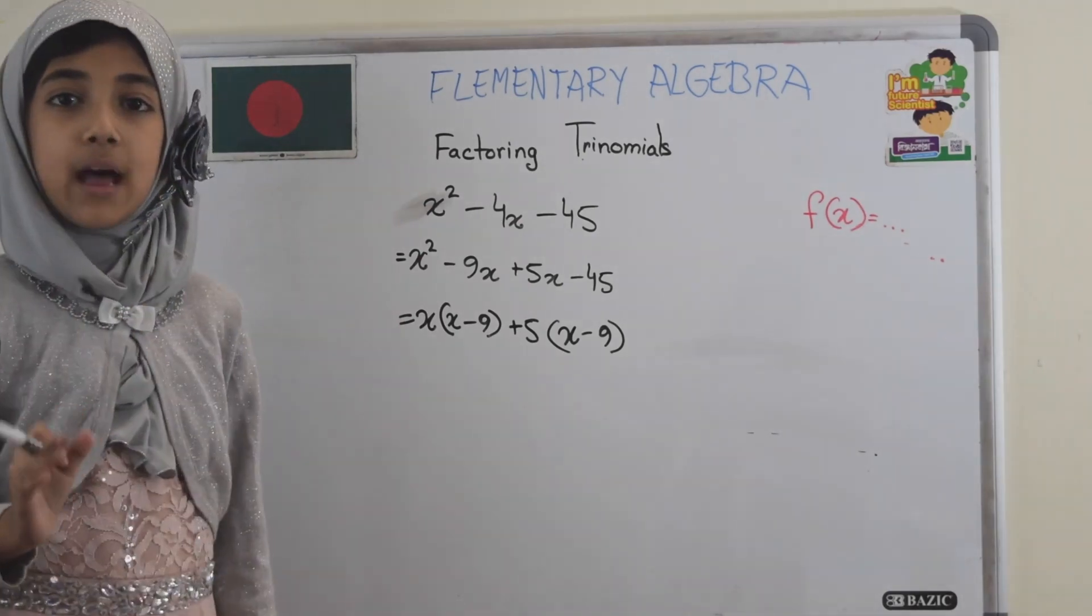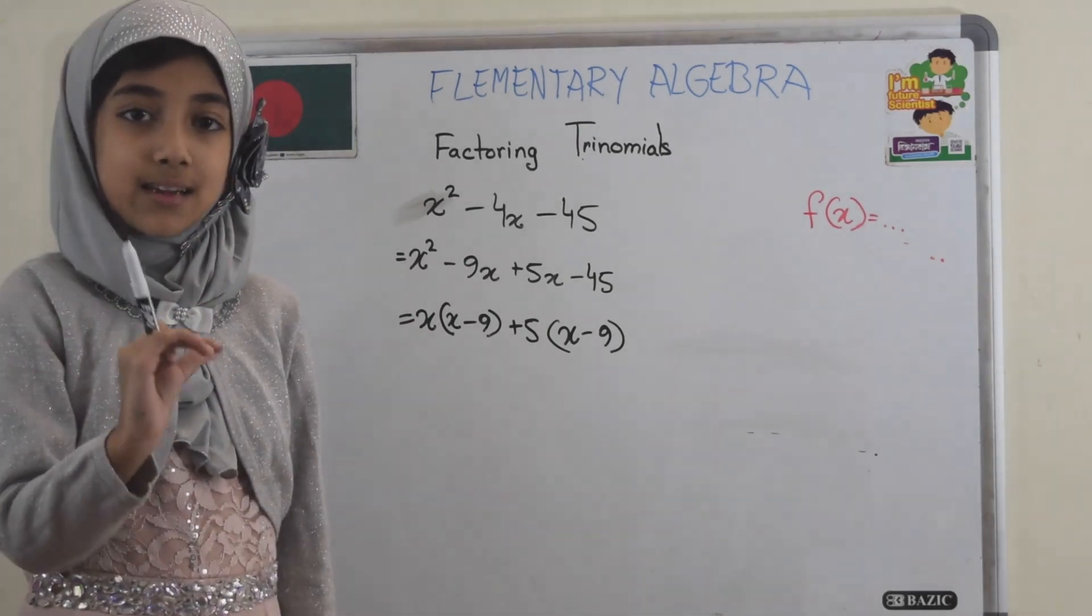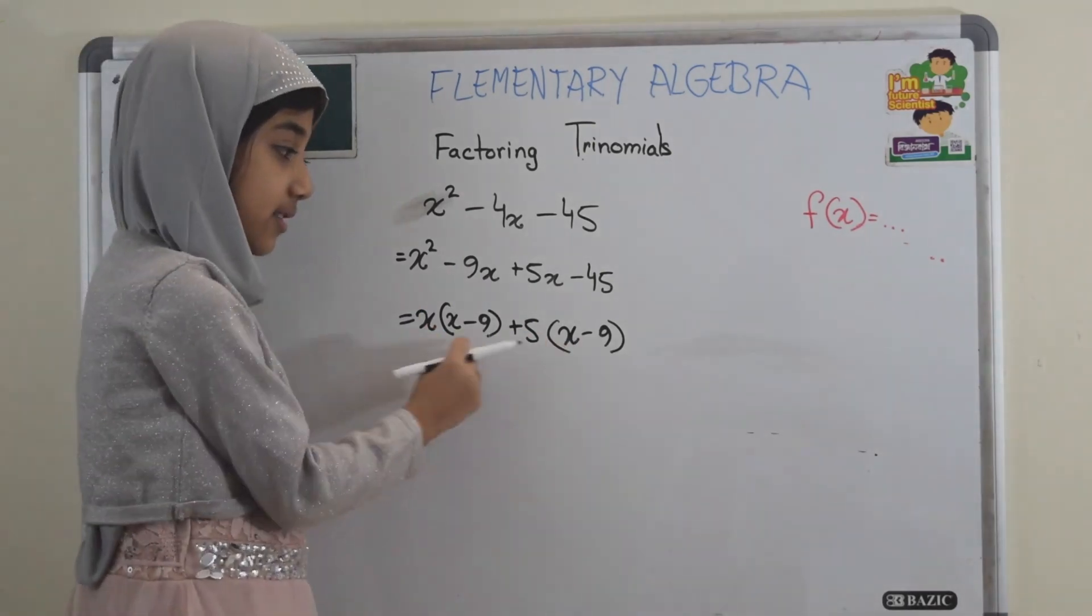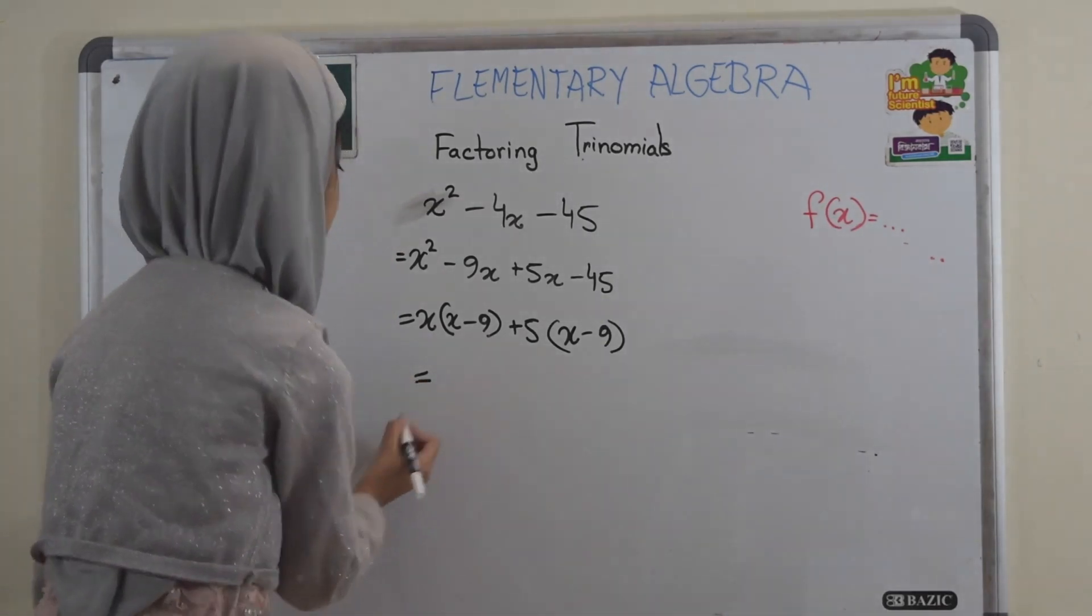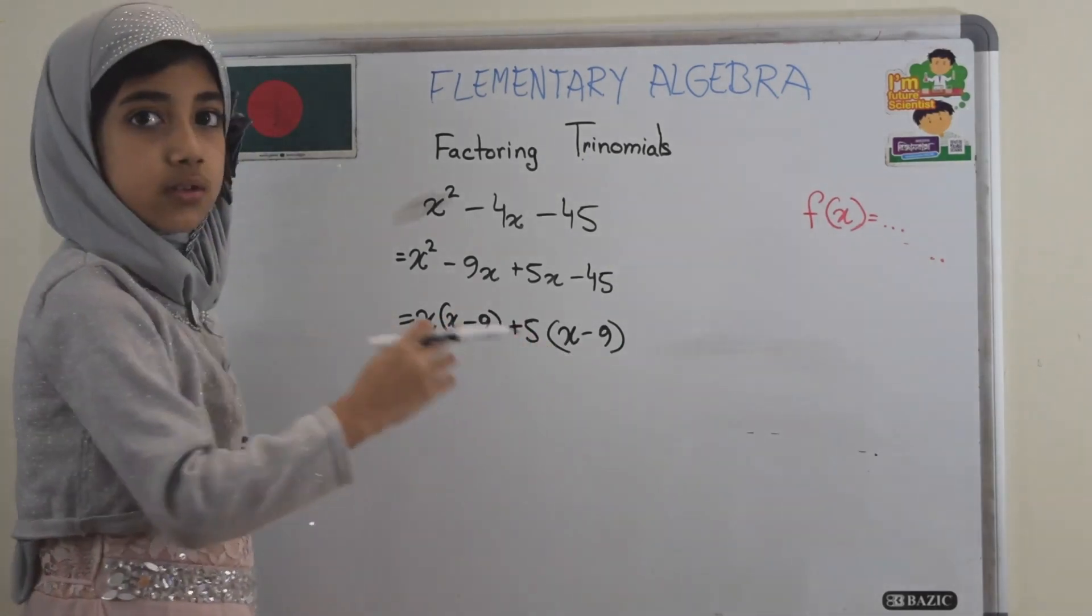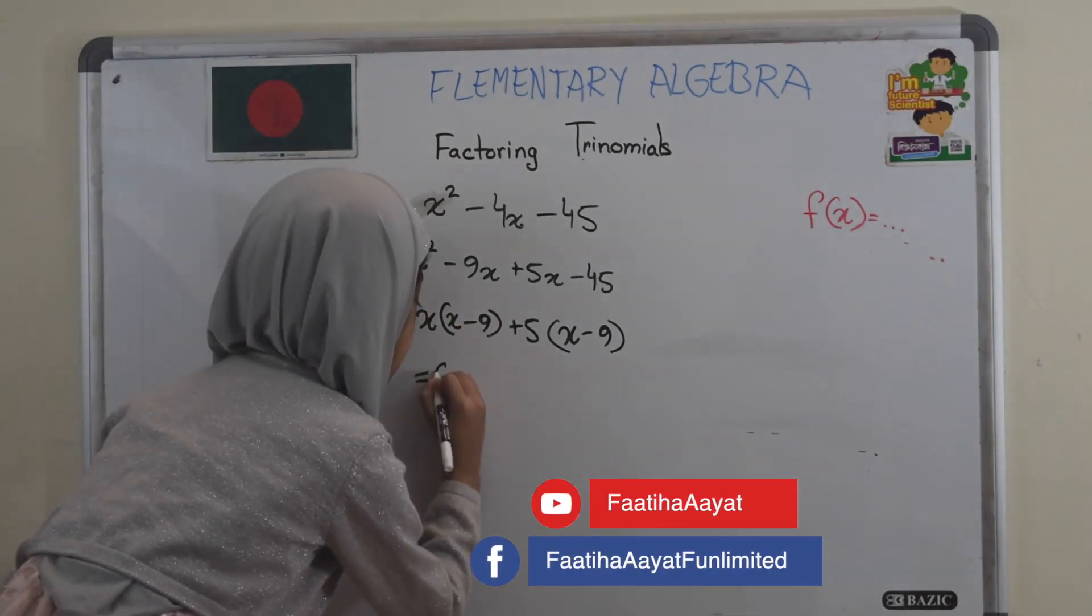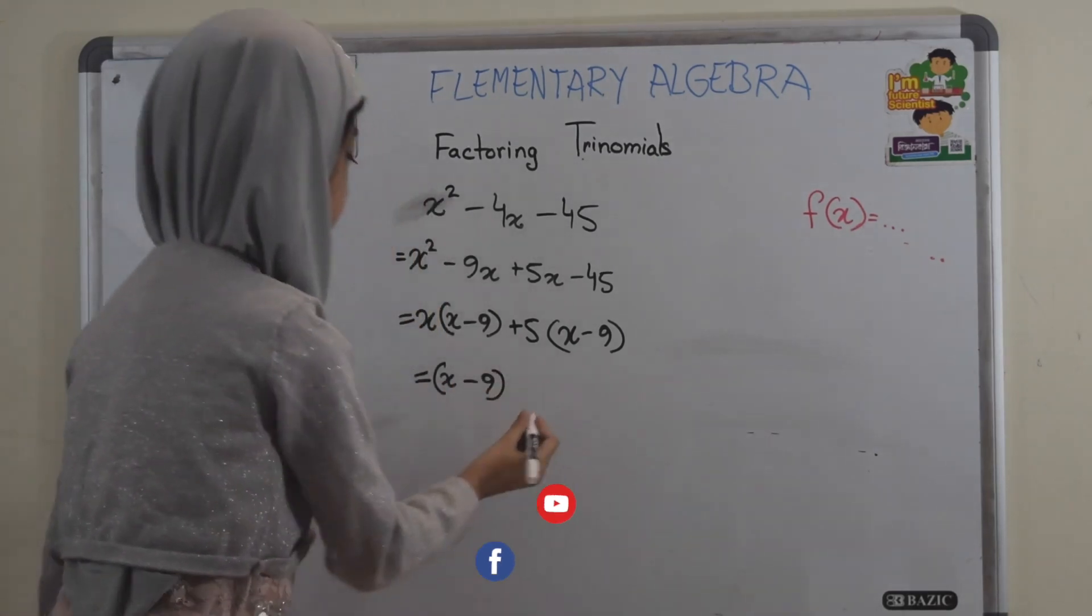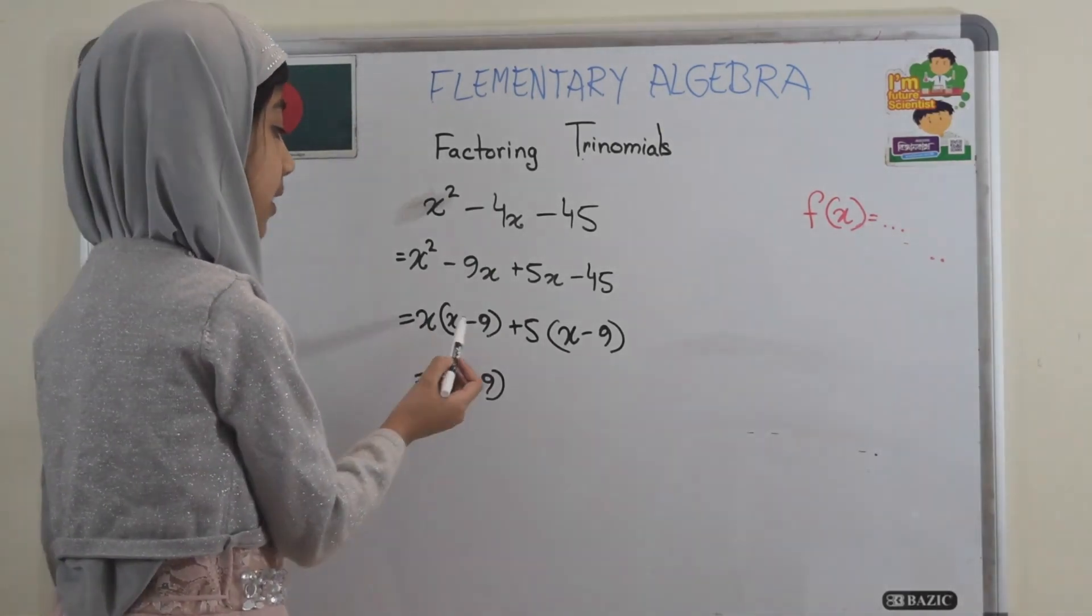Now we can see if this is correct if the two binomials are exactly identical. So that means that this is correct because we have the same binomials. Now the next step, I've got to see which binomials are identical. So here, I've got to leave it in the brackets: x minus 9 is identical, and the rest of the things that are left is x plus 5.